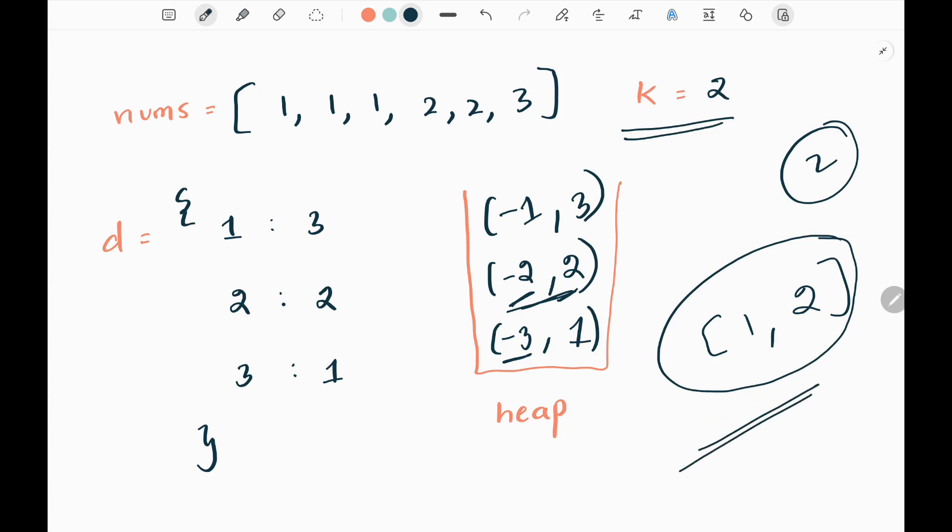That is one and two here. Then I will finally return this list. So the time complexity will be order of n log k and space will be order of n. That's all the logic is.